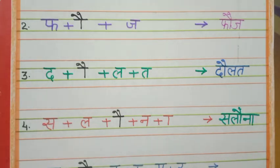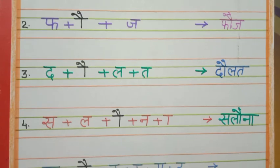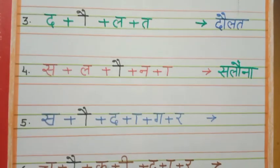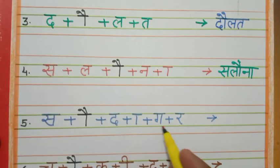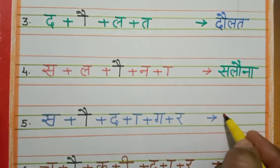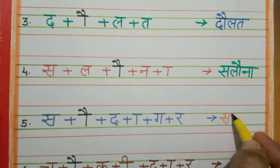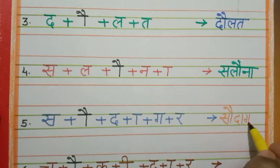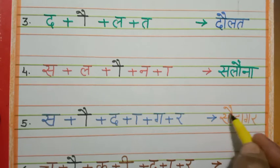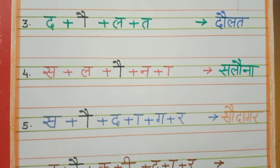Next, dekhiye. Sa, la, auki matra, da, auki matra, ga, rr. Sa, auki matra, da, auki matra, ga, rr. Sa, da, ga, rr. Ok?